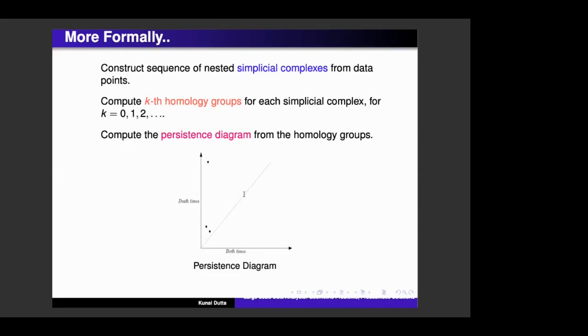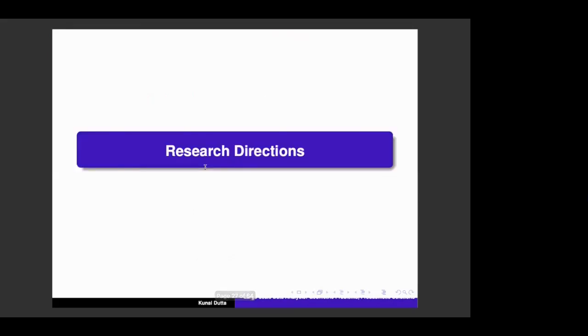So as you can see, the points that are plotted close to the diagonal means that these holes died soon after they were born. And the one which is far from the diagonal, this represents the hole, which lasted for a long time. Okay. So this is the information part.